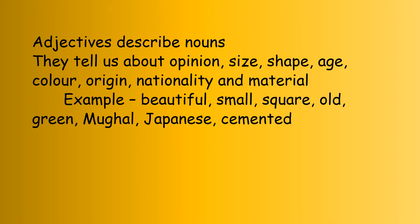Let us see what is an adjective. Adjectives describe nouns, so if you are describing a noun, that word becomes an adjective. They tell us about opinion, size, shape, age, color, origin, nationality, and material. I have given examples for each: opinion - beautiful, size - small, shape - square, age - old, color - green, origin - Mughal, nationality - Japanese, and material - cemented.